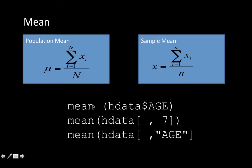In R, you can calculate it by using the mean function. You supply all the values for which you want to calculate the mean. You can say mean(hdata$age), which is all the values of age in that data frame hdata. You can also get at it by hdata within square brackets comma seven, seven being the seventh attribute that happens to be age. We leave the first parameter blank before the comma because we want all the rows, only the seventh column.